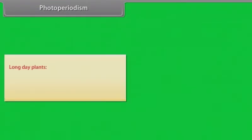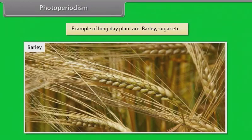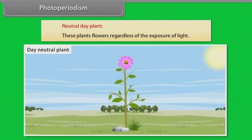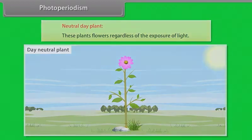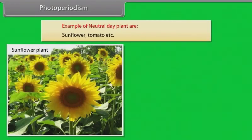Long day plants: these plants induce flowering when day length exceeds critical day length. Example of long day plants are barley, sugar beet, etc. Neutral day plants: these plants flower regardless of the exposure of light. Example of neutral day plants are sunflower, tomato, etc.